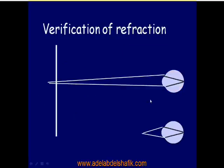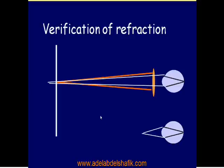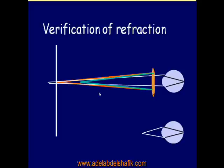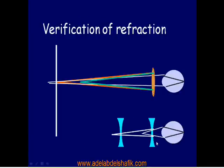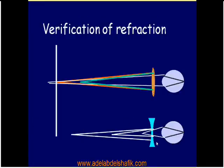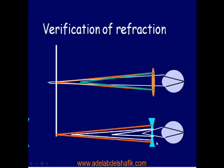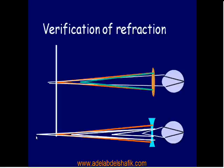Another way to verify: if you had a with movement and added plus lenses until reaching no movement, adding still more plus will push the focus between the observer and patient, causing against movement. Similarly, when you had against movement and added minus lenses to reach no movement, adding still more minus will push focus behind the observer, causing with movement. You can check yourself by adding more power and confirming that the red reflex reverses.